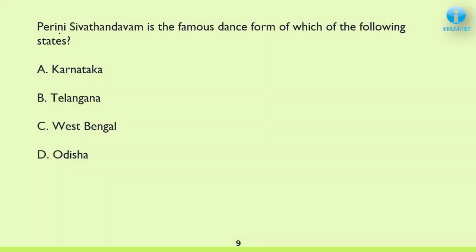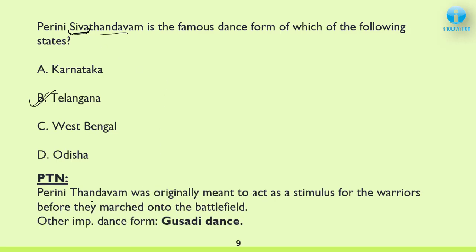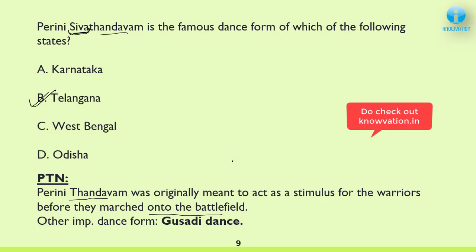Next: Perini Sivathandavam is the famous dance form of which of the following states? The correct answer is B — Telangana. Note that Perini Thandavam and Perini Sivathandavam refer to the same dance form. It was originally meant to act as a stimulus for warriors before they marched into the battlefield — to encourage warriors before they go to battle. One more important dance form of Telangana is Gusadi dance.